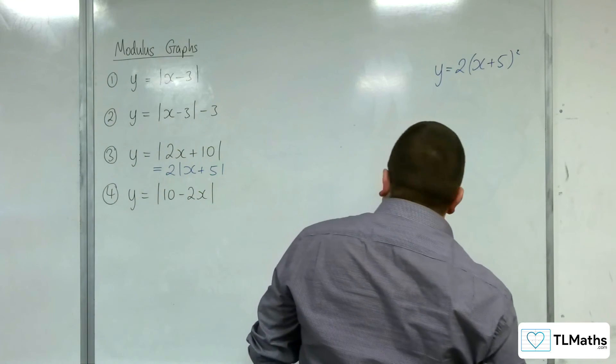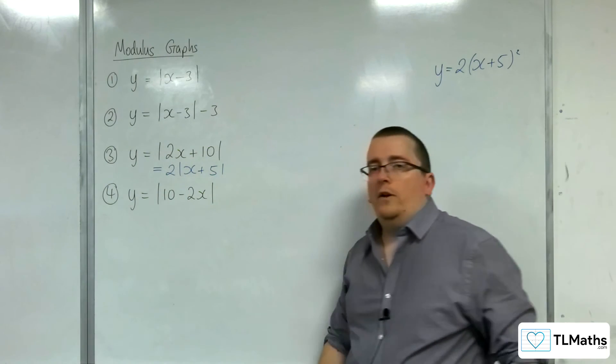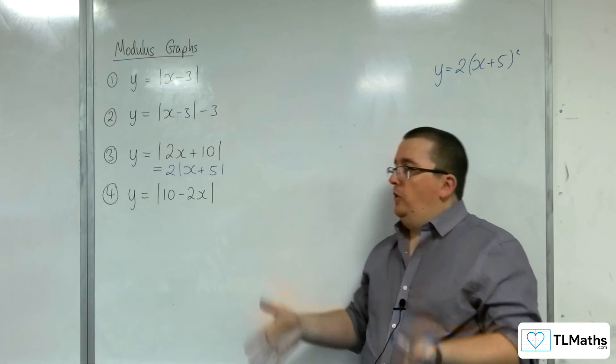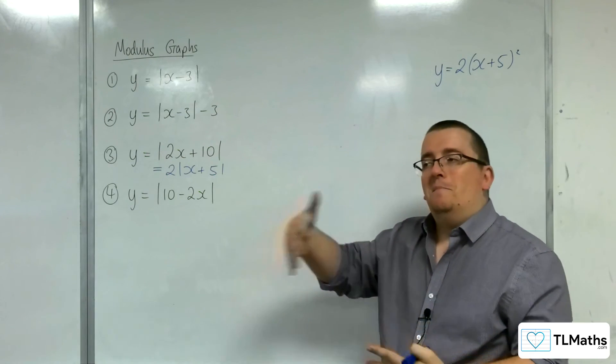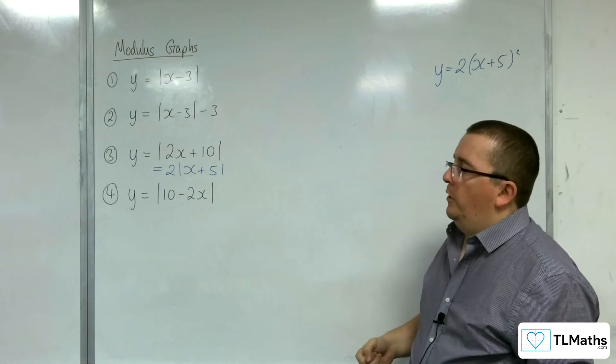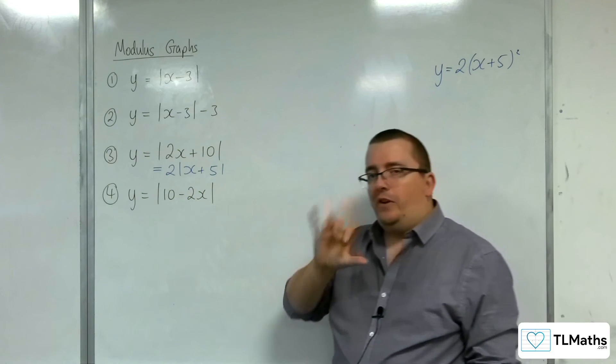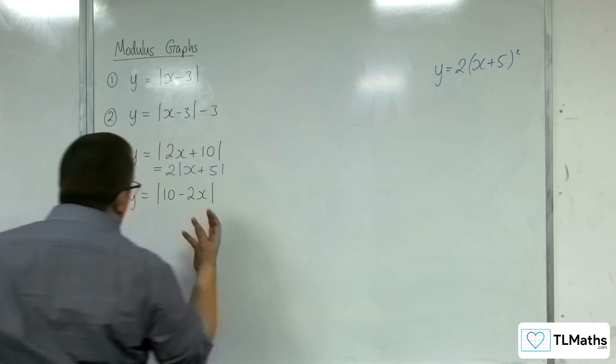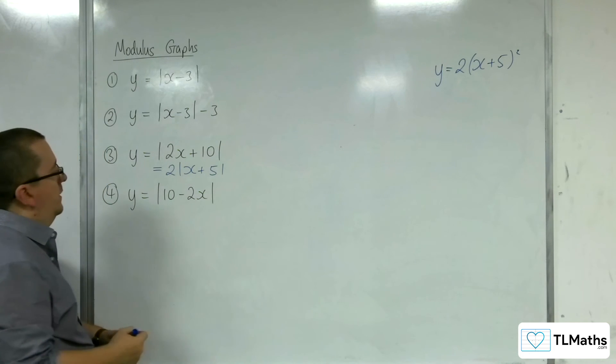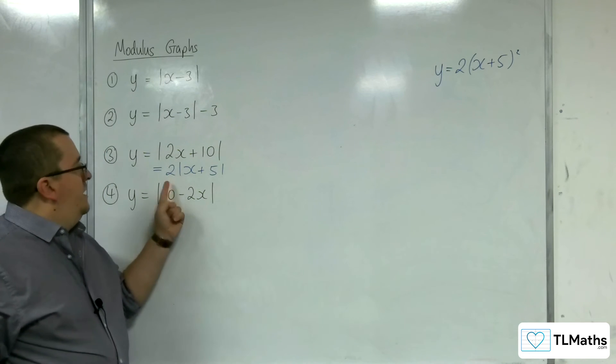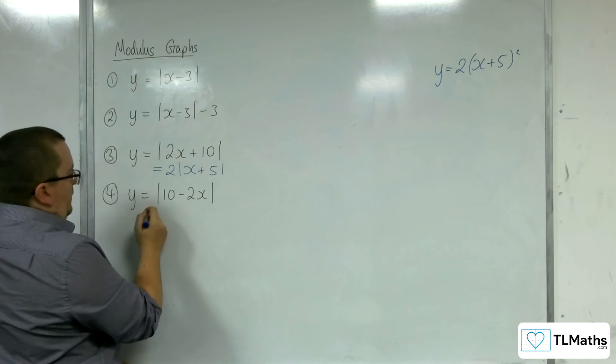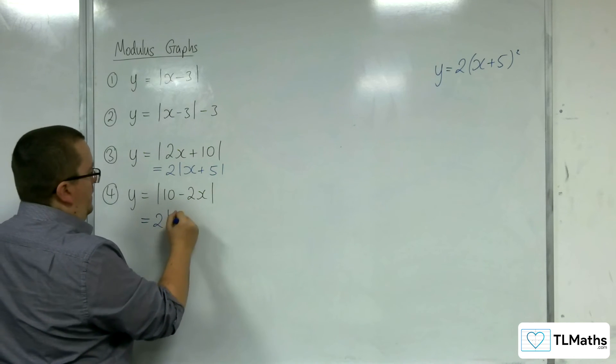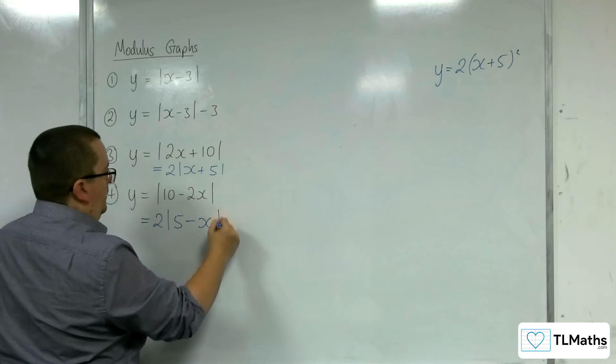Now, number 4 requires a little bit more thinking, and it's useful at this stage to see how you can algebraically manipulate y equals |10 - 2x| into a slightly different form, probably a more favourable form. So we've learnt from up here, number 3, that we can pull that 2 out. So we can factor 2 out of this. That's perfectly fine. And have |5 - x|.